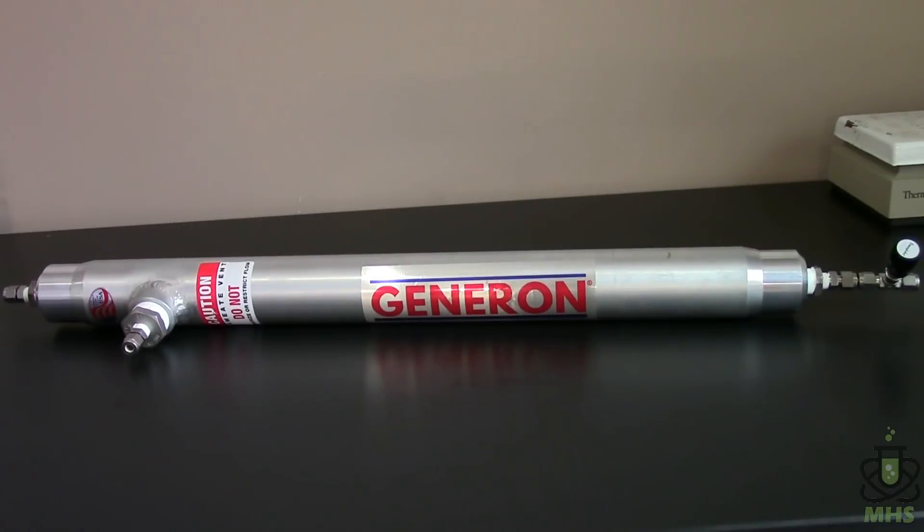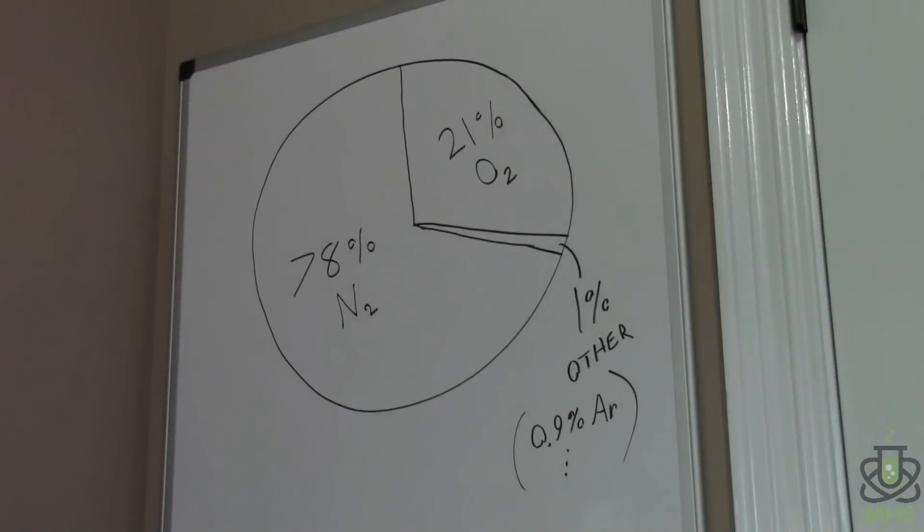The Generon membrane filter allows us to filter oxygen out of compressed air and outputs a stream of nitrogen gas with adjustable purity. This particular model can go up to 99.5% purity or about 0.5% oxygen left. The air we breathe is made up of about 78% nitrogen, 21% oxygen, and 1% other gases.